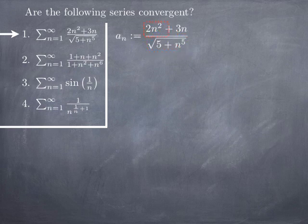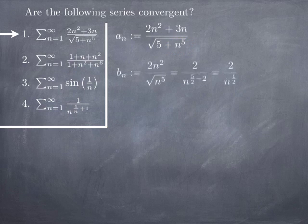One way to proceed is to focus on the asymptotic behavior: the top behaves like 2n² and the bottom like √(n⁵), and use limit comparison rather than worrying about the direction of inequalities. So we choose b_n = 2n² divided by √(n⁵). Since √(n⁵) = n^(5/2), and we have n² at the top, we get n^(5/2 − 2) = n^(1/2) at the bottom. So one way to write b_n is 2 divided by n^(1/2). The factor of 2 is inessential — any constant would work.